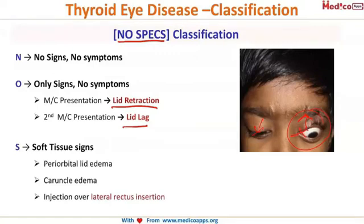S stands for soft tissue signs: that is periorbital and lid edema, caruncal edema, and injection over the lateral rectus insertion. Please remember this — the lateral rectus insertion shows an injection.